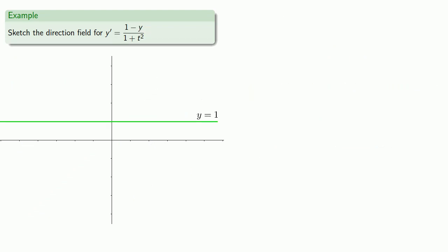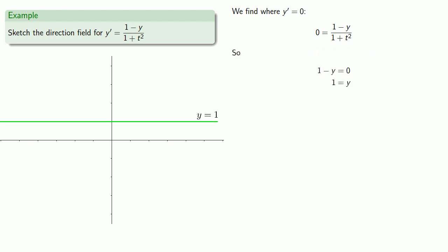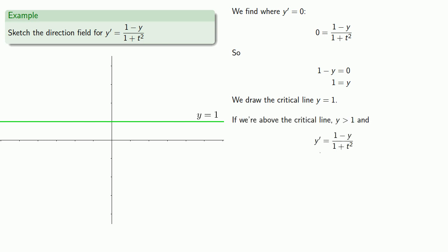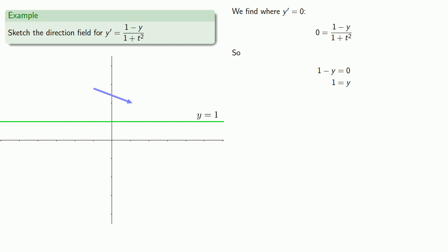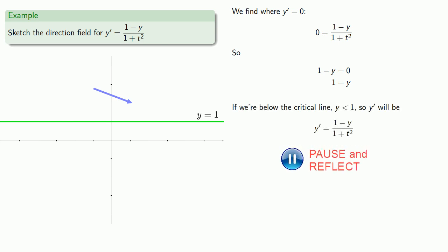Consider another differential equation. We find where y' is equal to zero. Because this is a rational expression, it's possible it might be undefined if the denominator is zero, but we see that can't happen. So the only critical line is y = 1. We graph that critical line. If we're above the critical line, y is greater than 1, and our derivative will be negative, so direction arrows point down and to the right. If we're below the critical line, y is less than 1, and our derivative will be positive, so direction arrows point up and to the right.